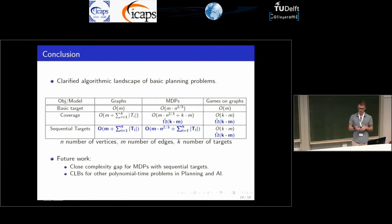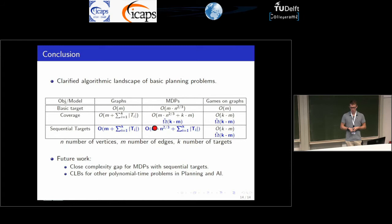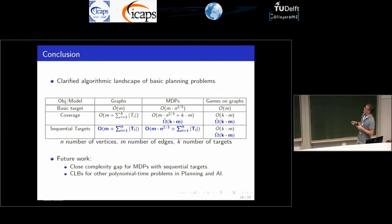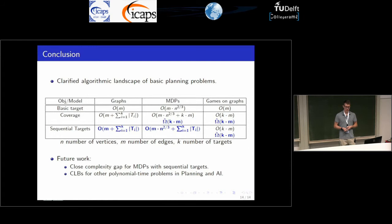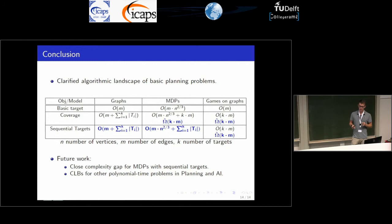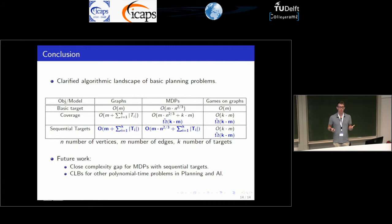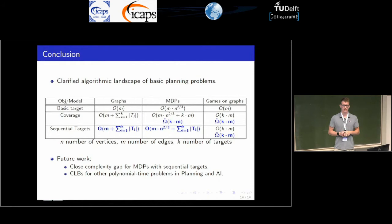To conclude, we clarified the landscape of these natural planning objectives. For future work, for MDPs and sequential targets there is a complexity gap — we don't know if there is a better running time than what we have given, due to a related open problem. We are working to close this gap. The future work is to close the complexity gap for the sequential target problem on MDPs, or give a lower bound. Another big open problem is finding conditional lower bounds for other polynomial-time problems in planning and AI.